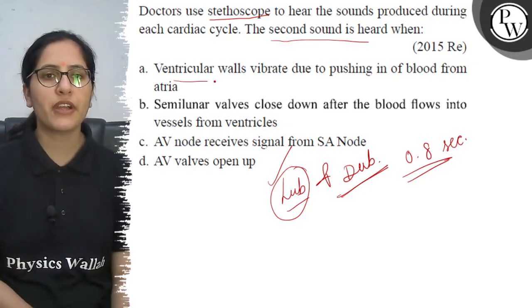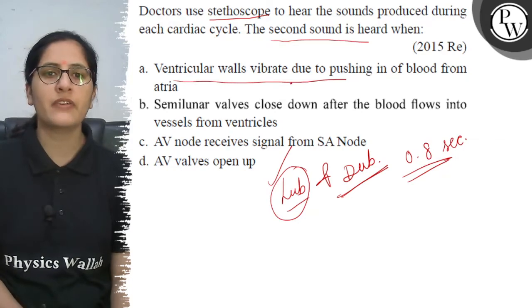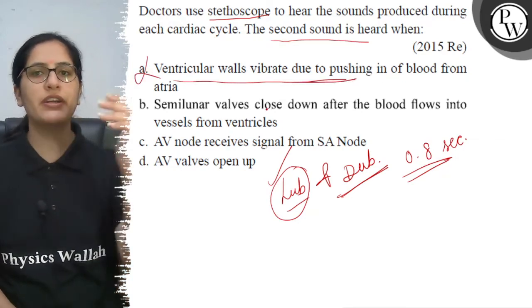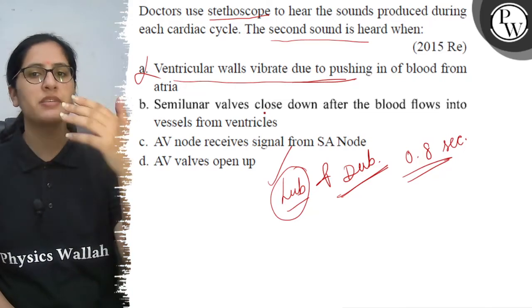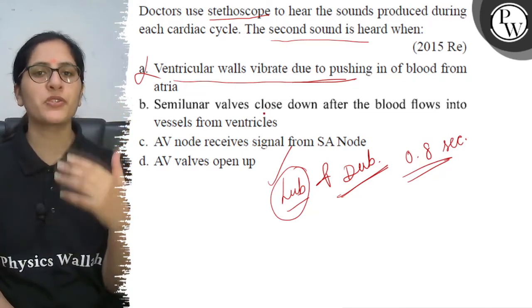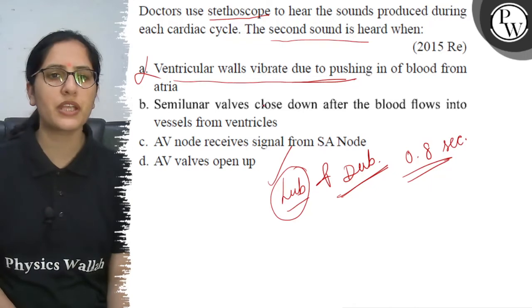Option A states that ventricular walls vibrate due to pushing in of blood. That is not correct — vibration due to blood entering the ventricle does not produce the second heart sound.